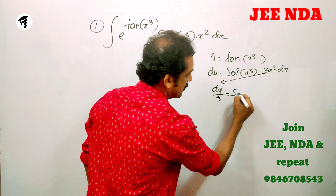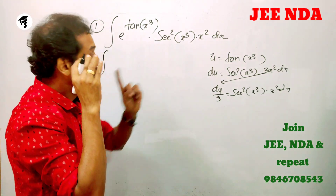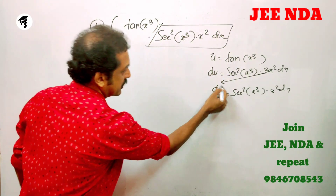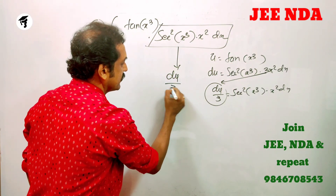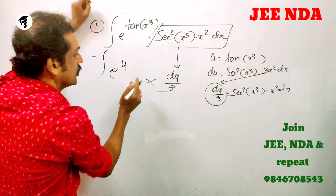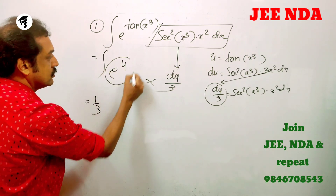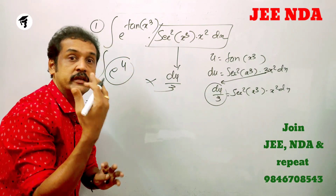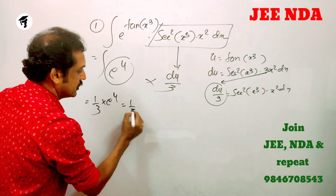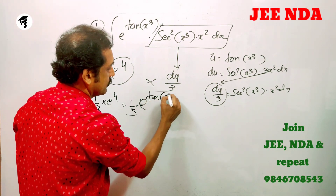So du/3 is equal to sec²(x³) into x² dx. The question in terms of u can be written as the integral of e^u du/3. Since tan(x³) becomes u, we get (1/3) e^u, and substituting back: the answer is (1/3) e^(tan(x³)) + C.